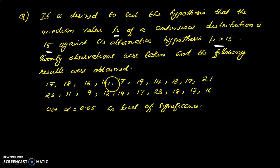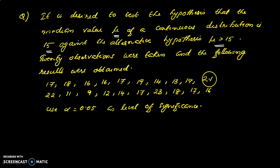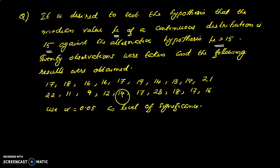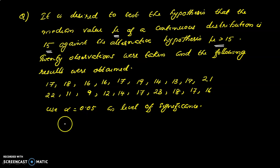16, 16, 17, 19, 14, 13, 19, 21, 22, 11, 9, 12, 14, 17, 23, 18, 17 and 60. Use alpha equal to 0.05 as the level of significance.